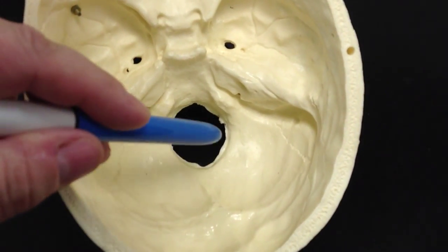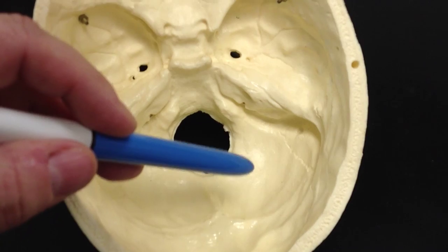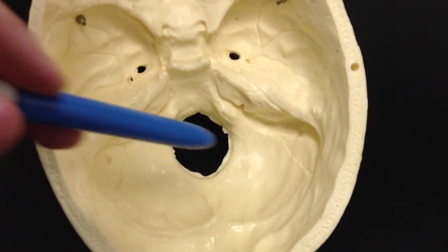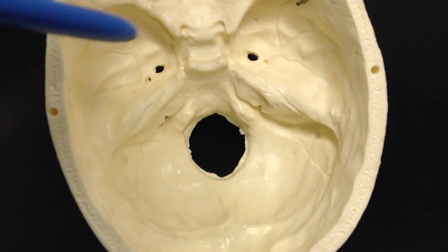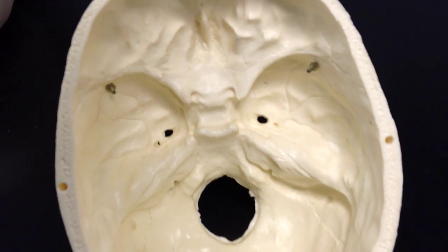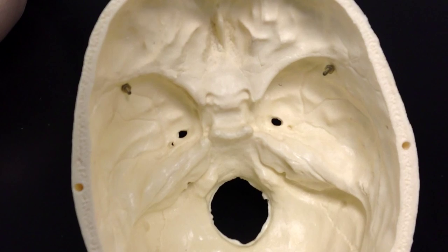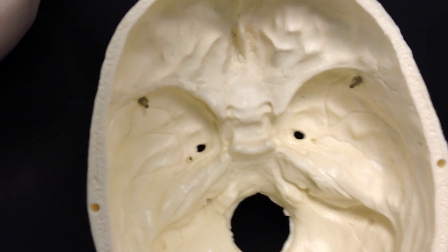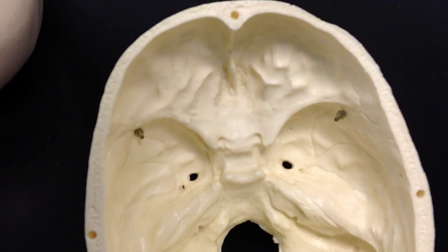Again, we can see the foramen magnum. We can see the occipital bone. Right here, all of this area that we're looking at, that is the sphenoid bone. With the sphenoid bone, they typically thought it looked like a bat's wing. And so that's where it got its location.